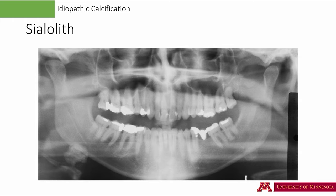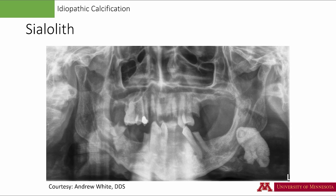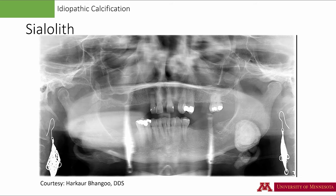A sialolith may be uniformly radiopaque or may have multiple layers. This radiograph shows a massive sialolith on the left side — almost uniformly radiopaque with a mostly smooth and well-defined margin. This radiograph was shared with me by one of my previous students, Dr. Andrew White. Thank you, Andrew. This is another appearance of a sialolith with multiple layers. Again, this large sialolith is superimposed over the inferior border of the mandible. Often a sialolith is solitary, but in some cases there may be more than one sialolith on one side.